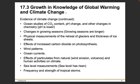Other evidence includes ocean studies of CO2 content and pH changes. Growing seasons are longer — they recently redid the growing zones and those maps look very different from the ones made about 20 years ago. Physical measurements of the retreat of glaciers and the thickness of ice sheets, effects of increased carbon dioxide on photosynthesis, wind patterns, ocean currents, effects of particulates from natural and human activities, sea level measurements — ocean levels are rising as more ice melts. The frequency and strength of tropical storms have also changed; we have more of them and they're stronger and more catastrophic than they have been historically.